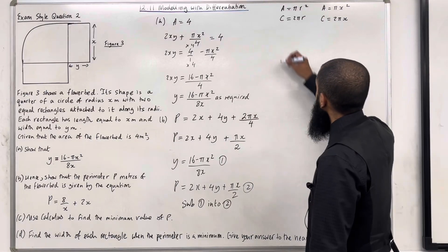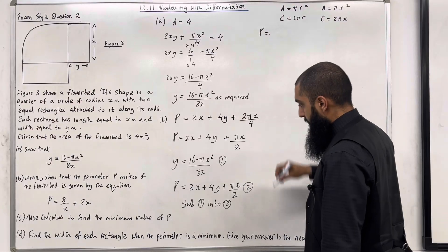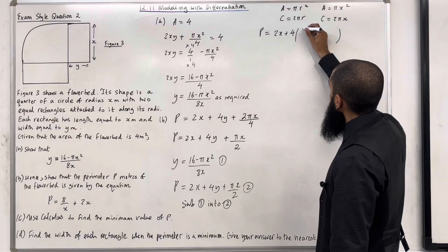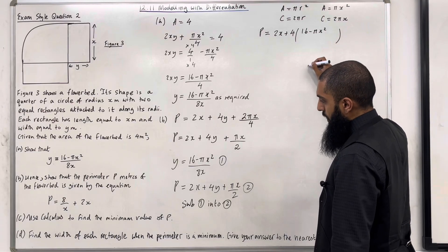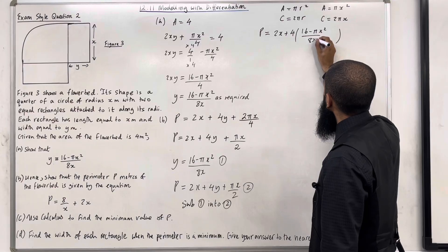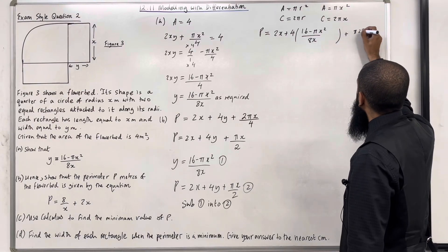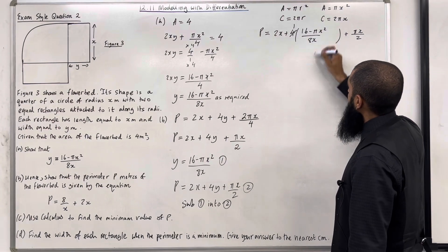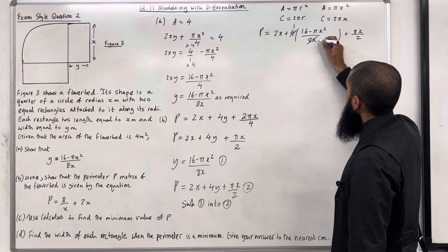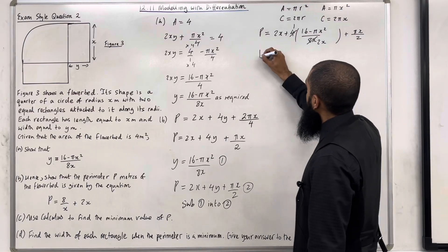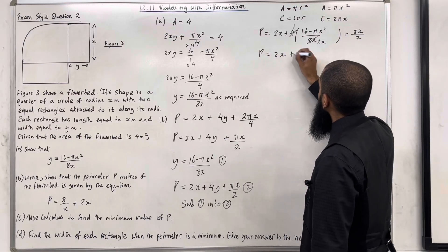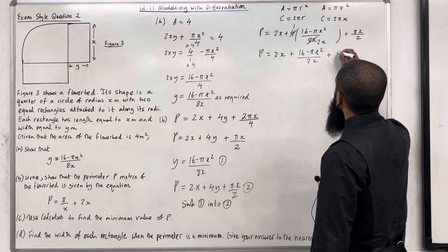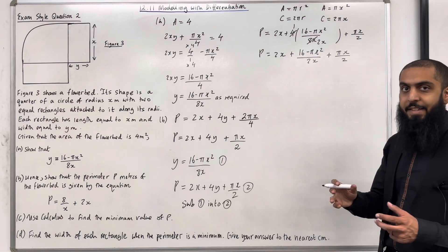So P equals 2x plus 4 lots of y, which is (16 minus pi x squared) over 8x, plus pi x over 2. Now 4 divided by 4 is just 1, and 8x divided by 4 is 2x. So P equals 2x plus (16 minus pi x squared) over 2x, plus pi x over 2.